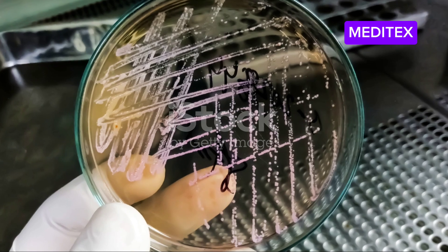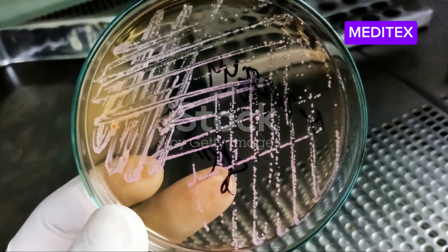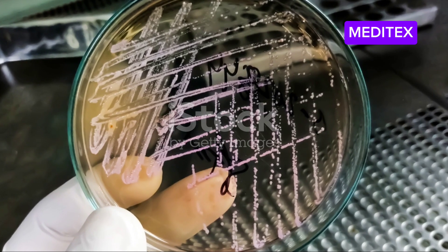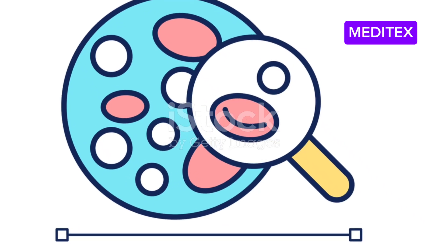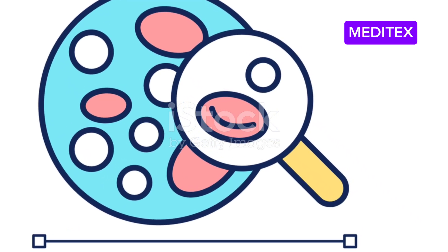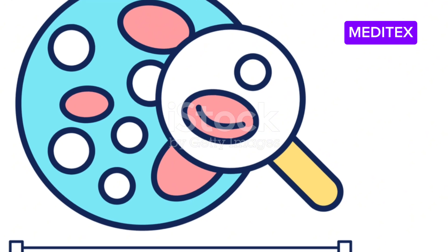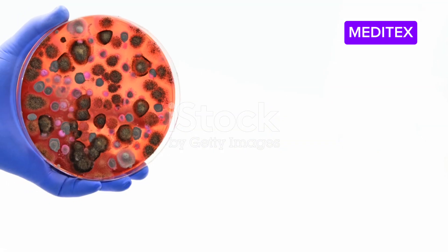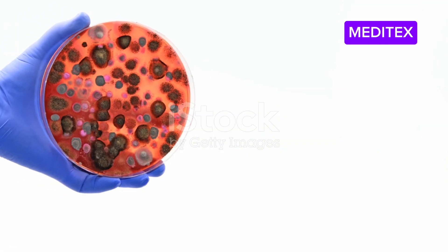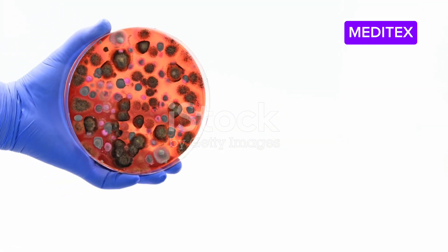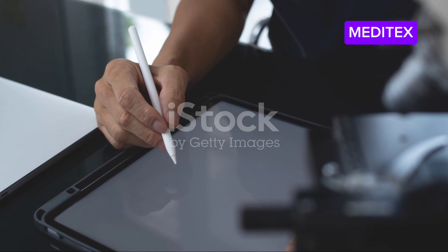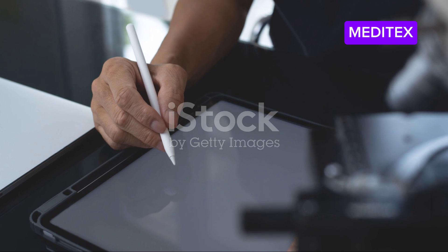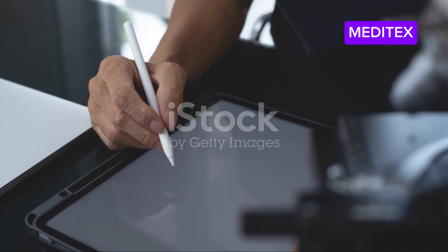Step 5: Documentation. Record your results meticulously. Note down the number of colonies, type of microorganisms if identifiable, and any other observations. This data is essential for maintaining quality control.